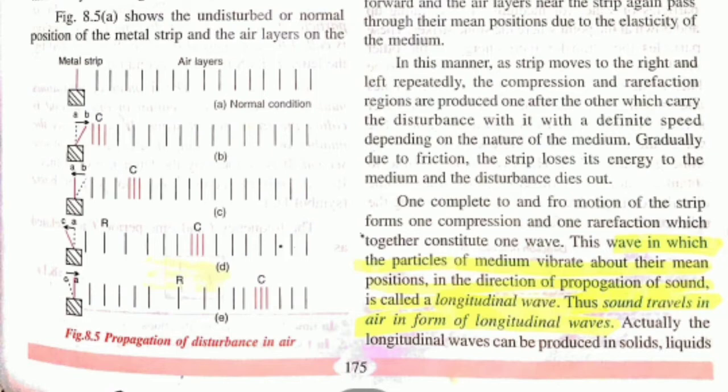There are two ways by which sound travels: longitudinal waves and transverse waves. Questions may ask you to define these. By the word 'longitudinal' you can understand it is in the direction of propagation of sound. As you can see on the screen, one characteristic of longitudinal waves is that they can be produced in solids, liquids, as well as in gases.